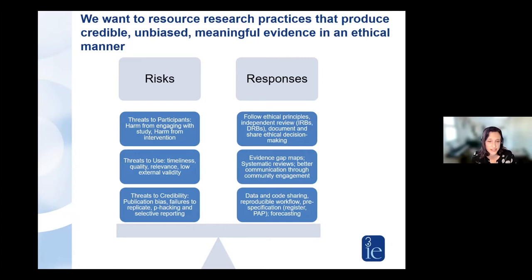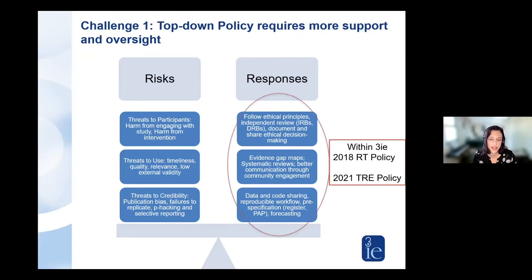We have strong practices to mitigate these risks, but at 3IE we've recognized three remaining challenges. We established a research transparency policy in 2018 — actually a result of a BITS grant — that defined and prioritized many best practices. We updated that policy in 2021, but found that a top-down policy that defines what we should do is only one step and it's not sufficient.